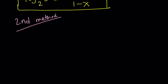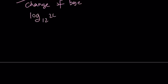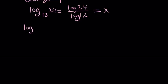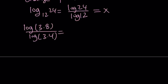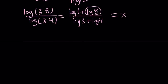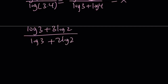The second method involves change of base. Our expression log 24 with base 12 equals x can be written as log 24 over log 12 equals x. Now let's factor 24 and 12, separating into prime powers. I'd rather go with 3 times 8 and 3 times 4. Using properties of logs, we can write this as log 3 plus log 8 divided by log 3 plus log 4 equals x. Since log 8 can be written as 2 to the third power and 4 is 2 squared, this becomes log 3 plus 3 log 2 divided by log 3 plus 2 log 2 equals x.